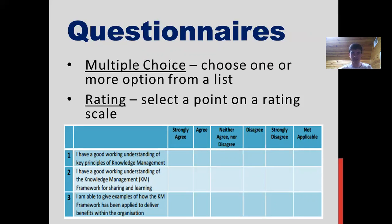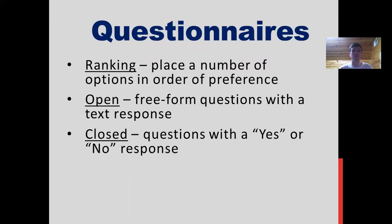For a question like 'you have an understanding of the key principles of knowledge management,' the user can select strongly agree, somewhere in between, or disagree. There are also ranking questions where you place a number of options in order of preference. There are open-ended questions where you just type in a response — the downside being that users may not want to write long paragraphs, and it can be hard to interpret the information. There are also closed-ended questions, which are simply yes or no, but things can vary and it's not always black and white.